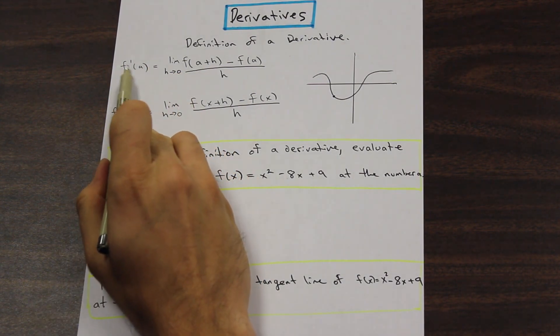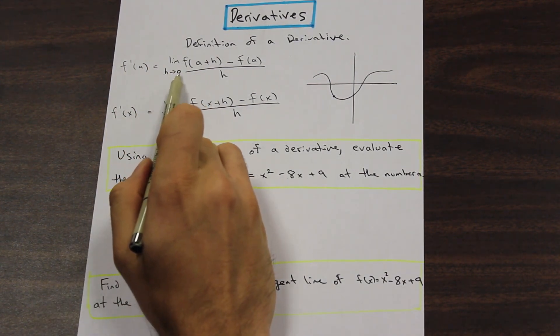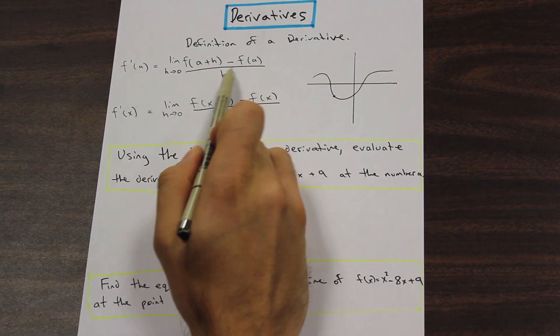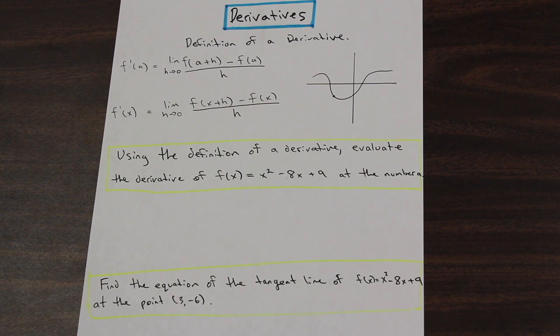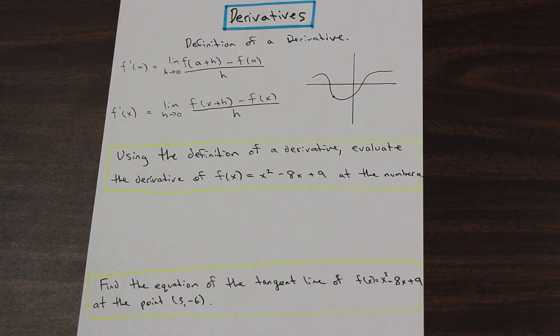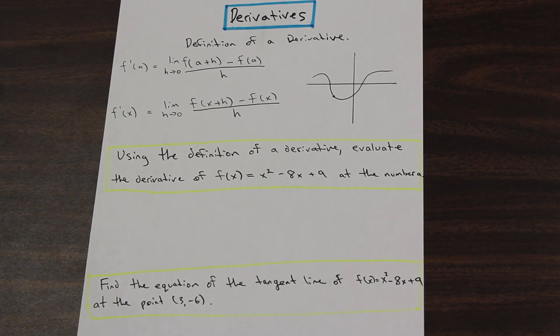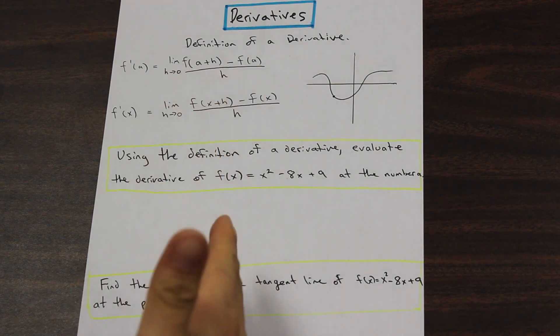And we have that f prime of a is equal to the limit as h approaches zero of f(a + h) minus f(a) over h. And you don't really need to fully understand exactly what this is, I don't think. If you want to know more, there's plenty of resources in your book. We're going to focus mainly on solving a problem of this type.